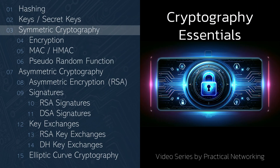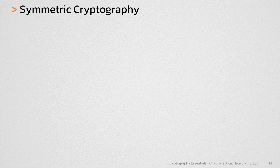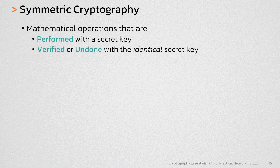Okay, so in the last lesson, we briefly defined symmetric cryptography. In this lesson, I want to define it a bit more thoroughly and introduce you to the next three lessons in this series. Symmetric cryptography is simply mathematical operations that are performed with one secret key and either verified or undone with the same secret key.